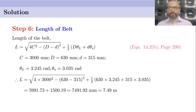In step 6, we find the length of the belt using equation 14.2B on page 289: L = √(4C² − (D − d)²) + ½·(D·θL + d·θS). With C = 3000 mm, D = 630 mm, d = 315 mm, θL = 3.245 radians, and θS = 3.035 radians, substituting these values gives L = 7491.92 mm, approximately 7.49 meters.